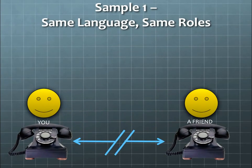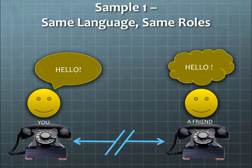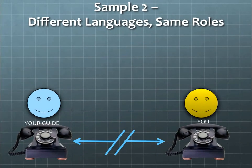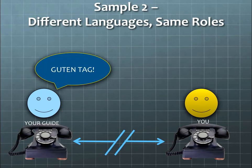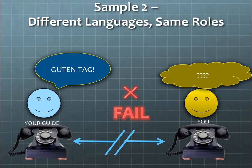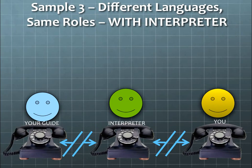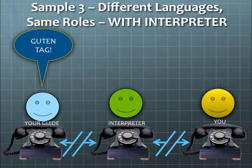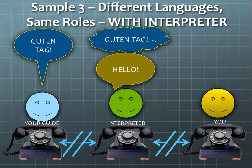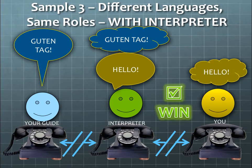Let's look at some samples of synchronous, real-time, face-to-face communications to see what they can teach us about designing asynchronous communication and EMR documentation. The first sample: same language, same roles — this might be you talking on the phone to a friend. You say hello, your friend hears hello. That's a communications win. The next sample: two different languages but the same roles, such as traveling in Germany where your guide says 'Guten Tag.' You have no idea what that means — communications fail. With an interpreter, the guide says 'Guten Tag,' the interpreter translates that into 'hello,' and you hear 'hello' — achieving the communications win.